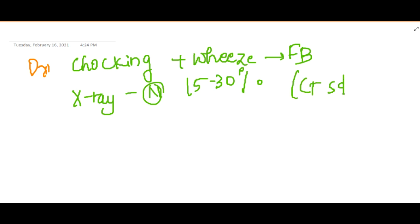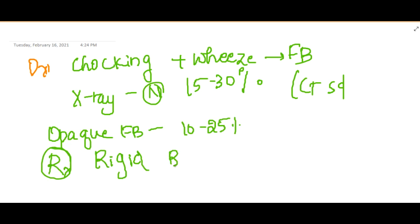CT scan may help the patients if there is opaque foreign body ingested, only in 10-25% of cases. If you see, prompt in the treatment, we should do rigid bronchoscopy and you should remove the foreign body with the help of this rigid bronchoscopy. Thank you guys for watching.